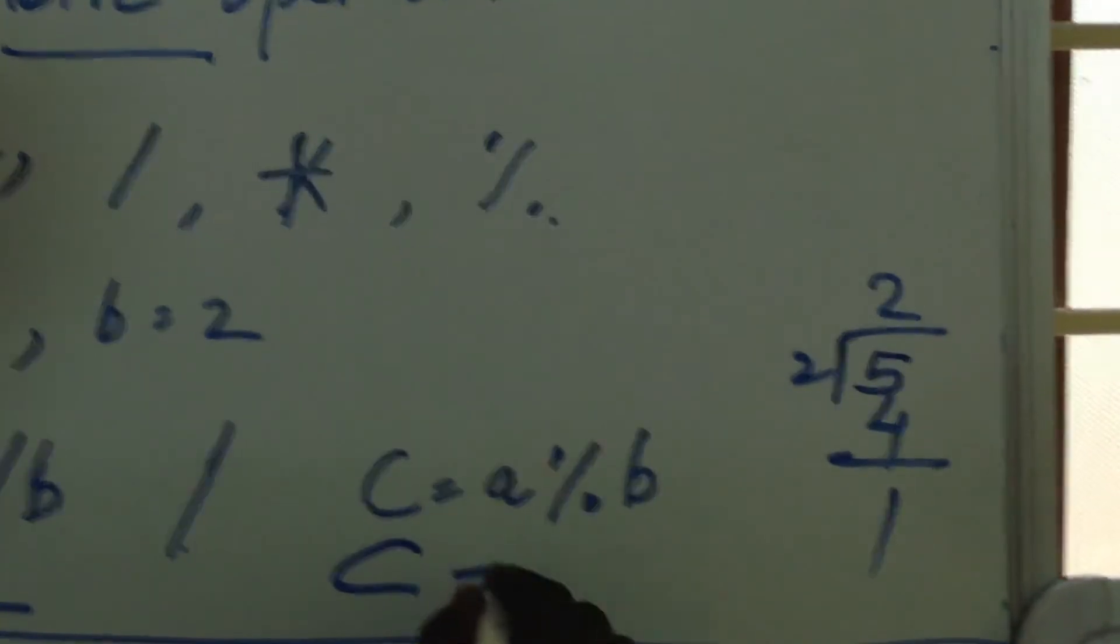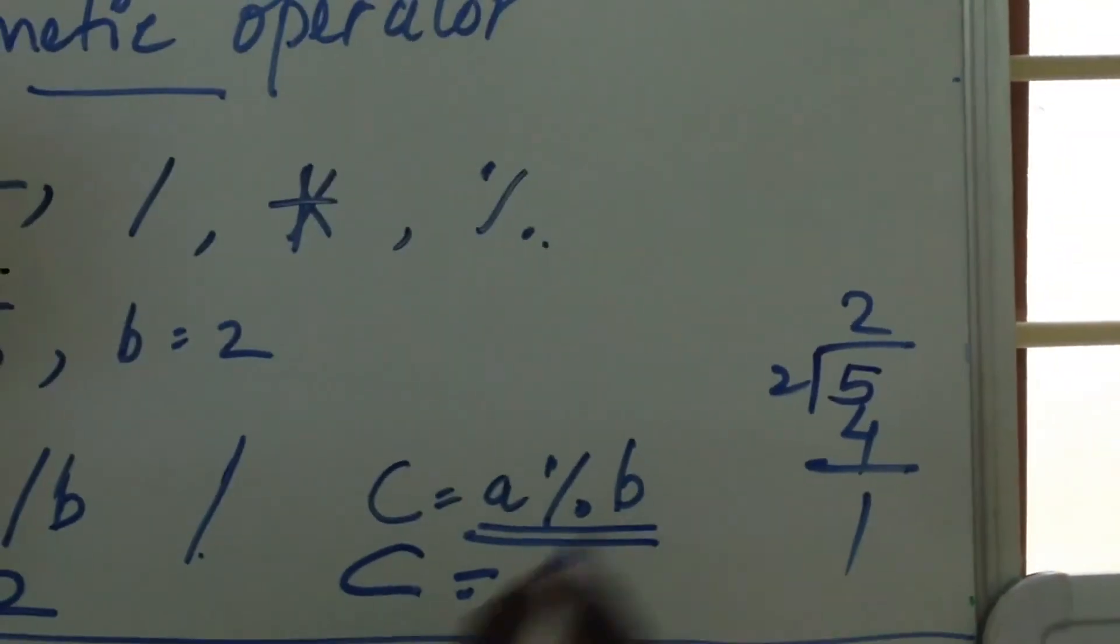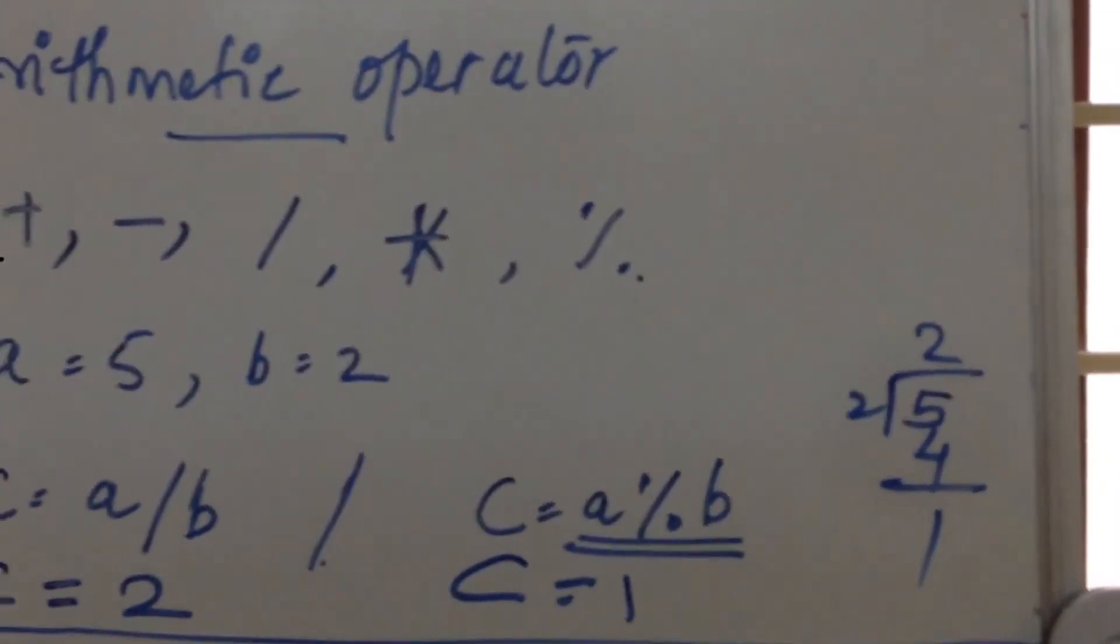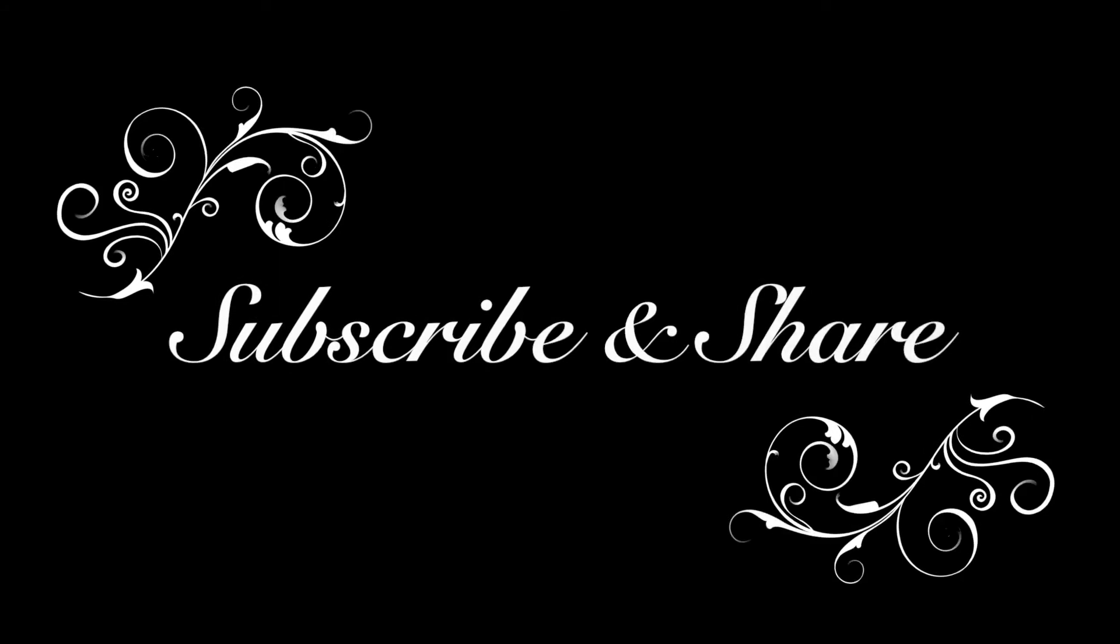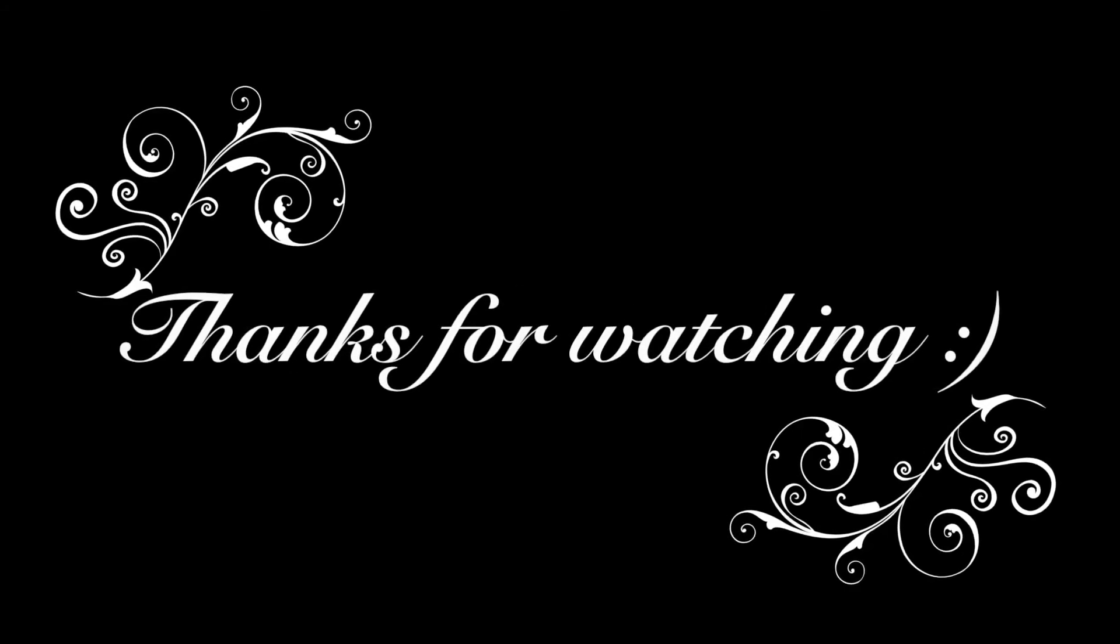So the value of c, the value of this expression is 1. This operator is called a modular operator which is used to get the remainder. Thank you.